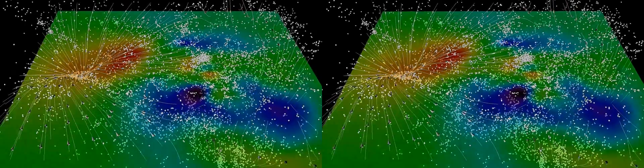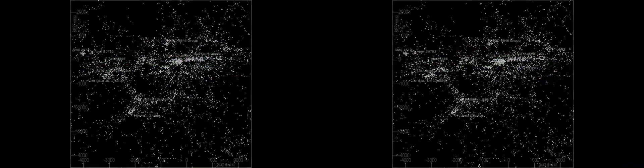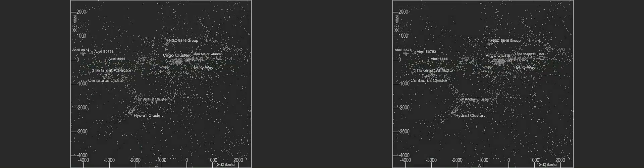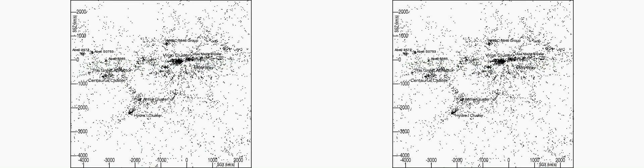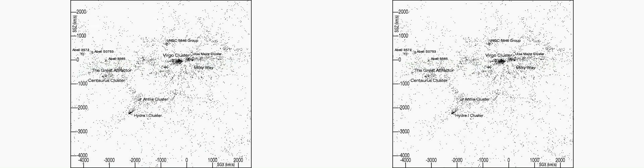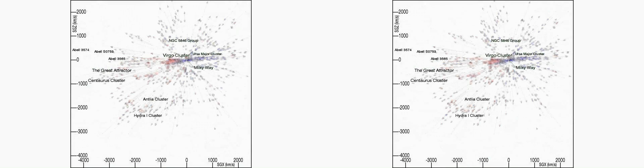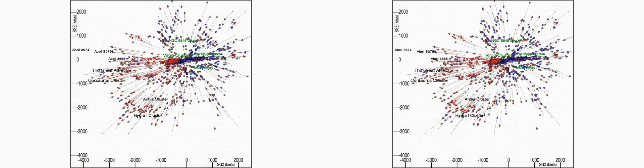Now there is a 90 degree rotation and the slab being considered is 2000 km per second thick, capturing the wall of structure running from Centaurus and Antlia through Virgo and Ursa Major. Again, the map of observed peculiar velocity reveals the right-left dichotomy. Blue arrows towards us on the right, red arrows away on the left.